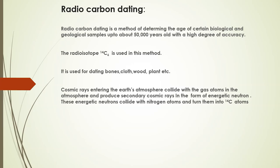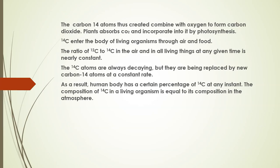When cosmic rays enter the Earth's atmosphere, they collide with gas atoms and produce secondary cosmic rays in the form of energetic neutrons. These energetic neutrons collide with nitrogen atoms and turn them into carbon-14 atoms. The carbon-14 atoms thus created combine with oxygen to form radioactive carbon dioxide. Plants absorb this carbon dioxide and incorporate it through photosynthesis. Carbon-14 enters the body of living organisms through air and food. The ratio of carbon-12 to carbon-14 in the air and in all living things at any given time is nearly constant.